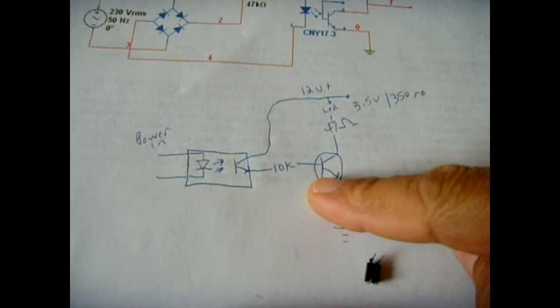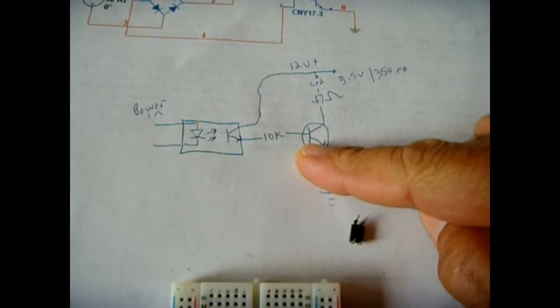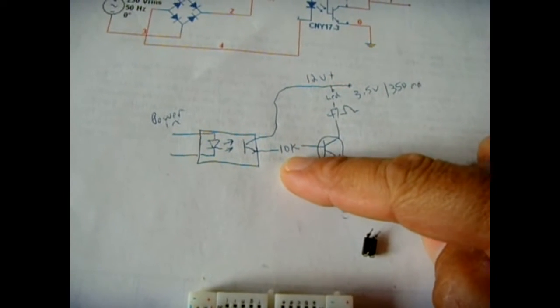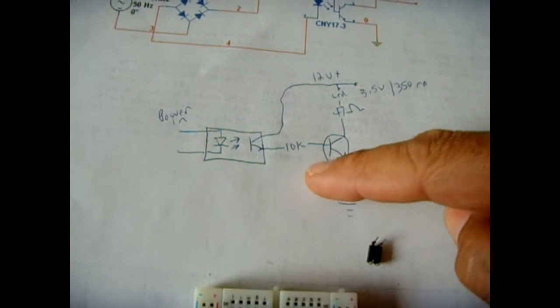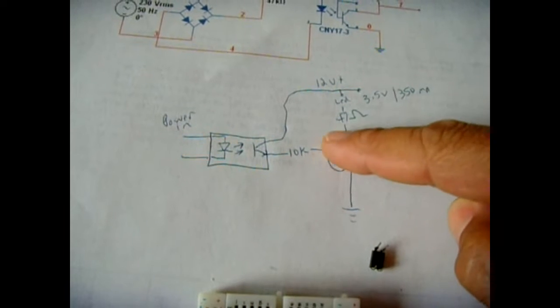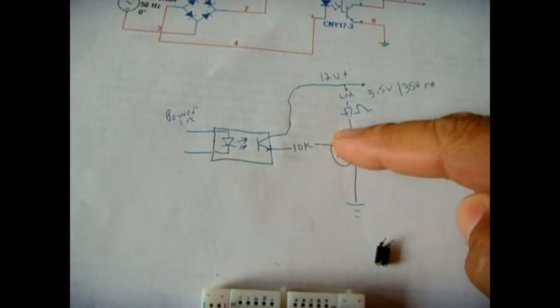I have the emitter going into the base of the transistor. Now depending what this value is, the 10k, this regulates how much current is going to flow through. So if you make that higher, you have less flowing through. If you make that lower, it'll be more current going through.